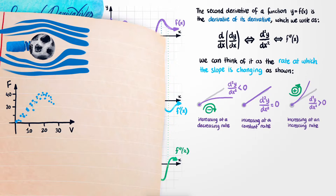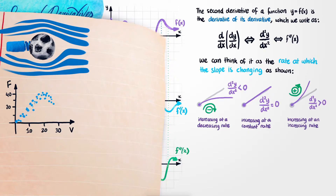You'd like to figure out exactly when the force on this ball is increasing at an increasing rate, or increasing at a decreasing rate. You can get that information by differentiating some function, but the problem is that you don't actually have a function to differentiate. But that's not really a problem, because most graphing software these days is actually able to fit a curve to your data.